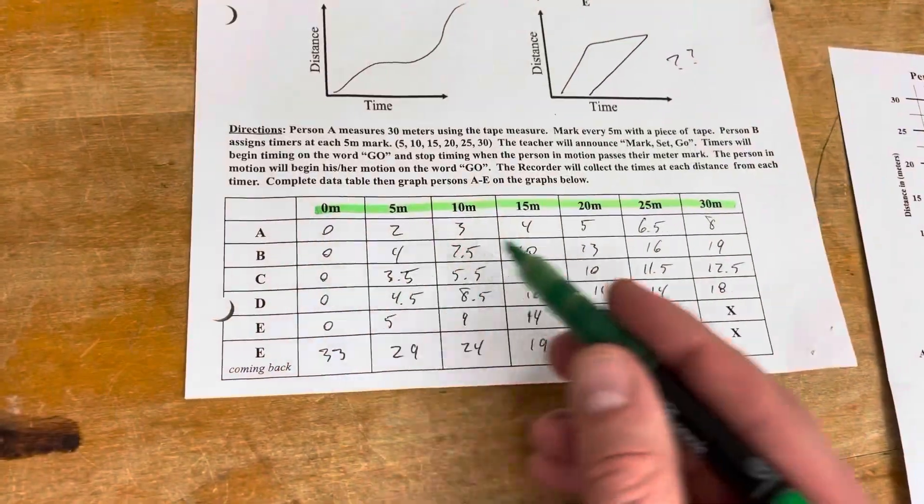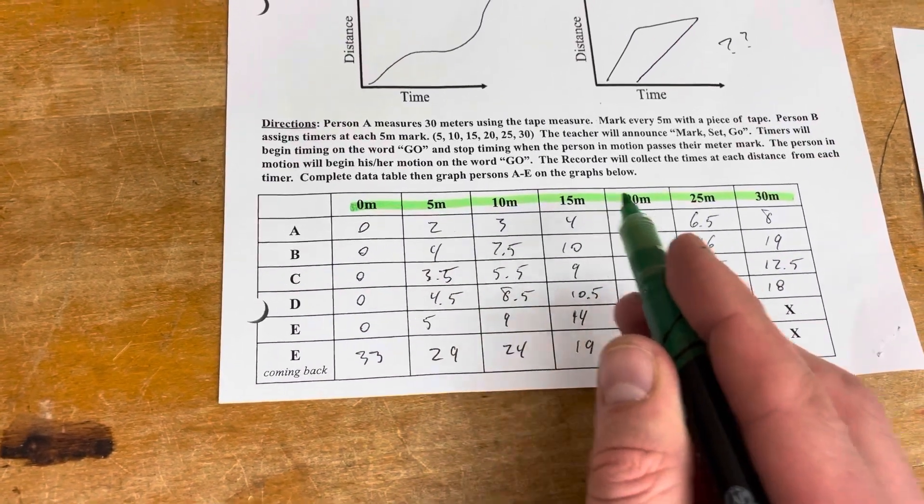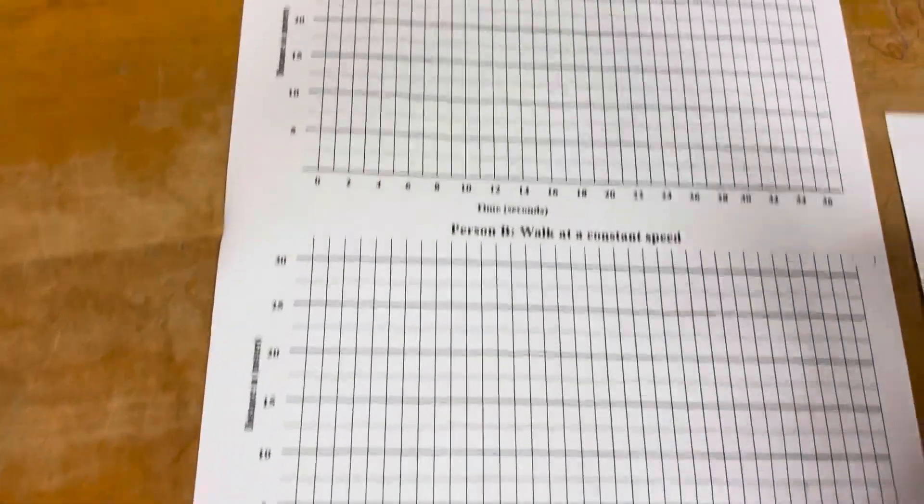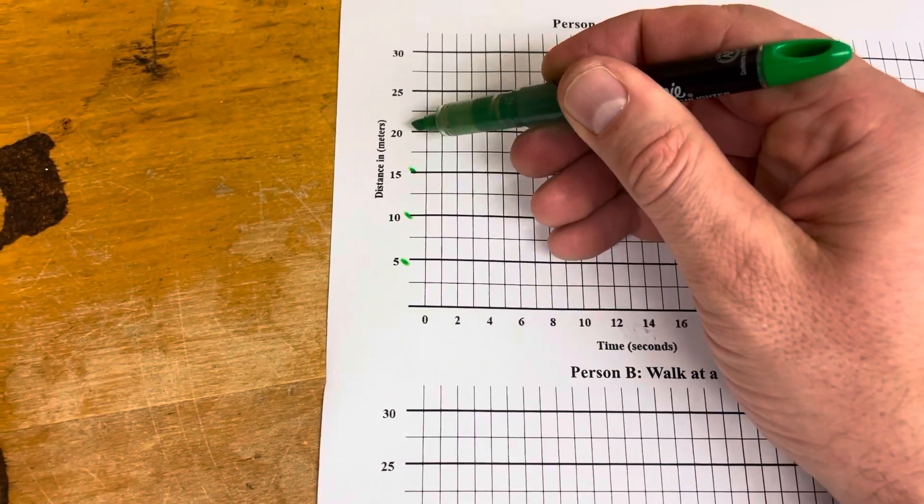I'm going to highlight all the meter marks. These are the parts of the floor that were taped off, where the people were stopping their stopwatches. Those are indicated on the graph by the distance side.